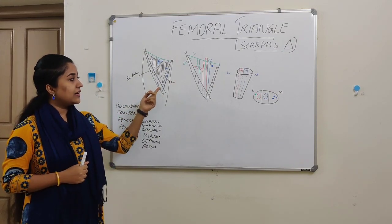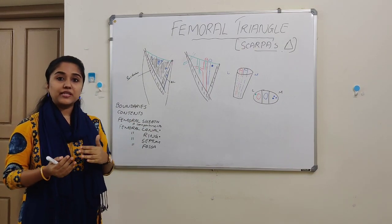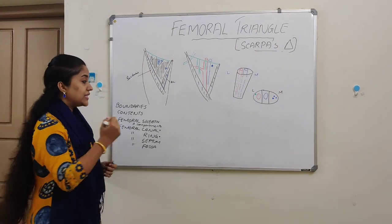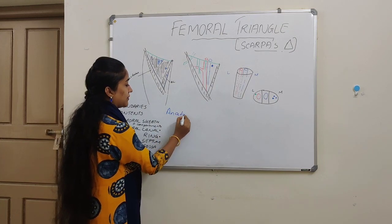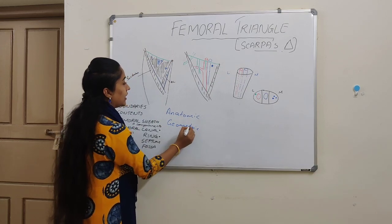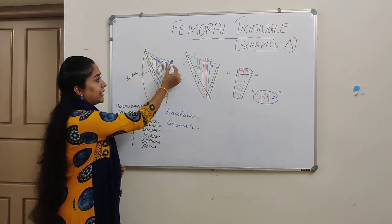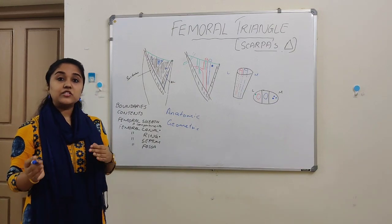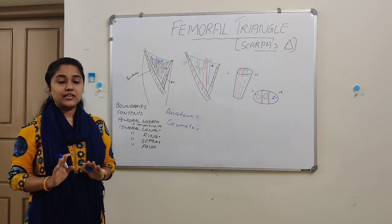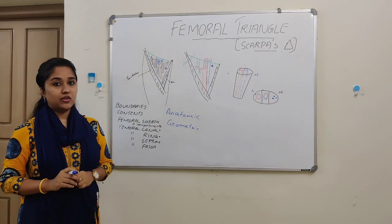The medial boundary is formed by the medial border of adductor longus. Based on the presence or absence of adductor longus, we can divide the femoral triangle into two triangles: the anatomic triangle and the geometric triangle. In the anatomic triangle, the medial boundary is the medial border of the adductor longus, whereas in the geometric triangle the medial boundary is the lateral border of the adductor longus. Usually we take only the anatomic triangle.